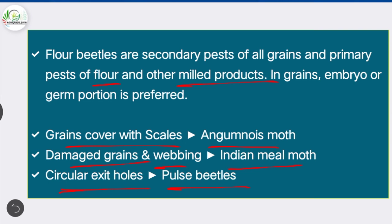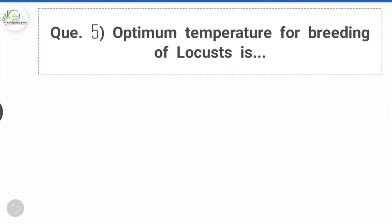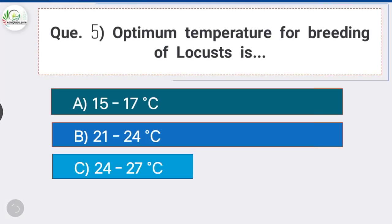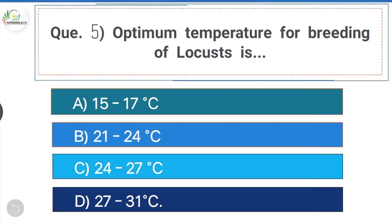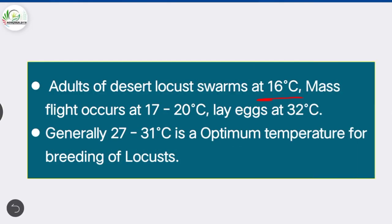Question 5: Optimum temperature for breeding of locust is Option D, the correct answer: 27 to 31 degrees Celsius. Adults of desert locust swarm at 16°C; mass flight occurs at 17 to 20°C; eggs are laid at 32°C; and generally 27 to 31°C is the optimum temperature for breeding of locust.